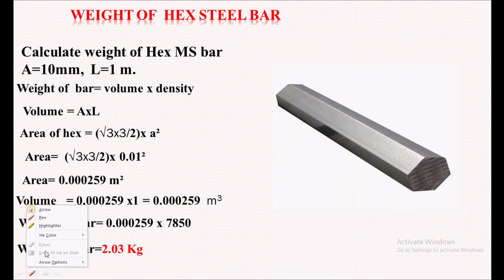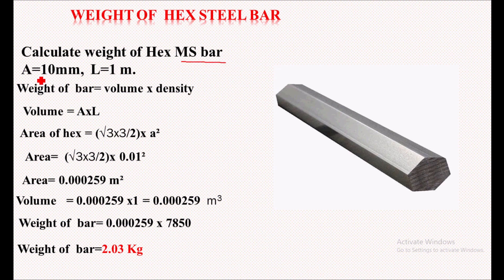Let's see the example: calculate the weight of hex mild steel bar where a is 10mm. 'a' is nothing but the side of this hexagonal steel rod, so the side of this hexagon is 'a' which is 10mm, and length is 1 meter of this hex bar. This total length given is 1 meter, that is nothing but 'L'.